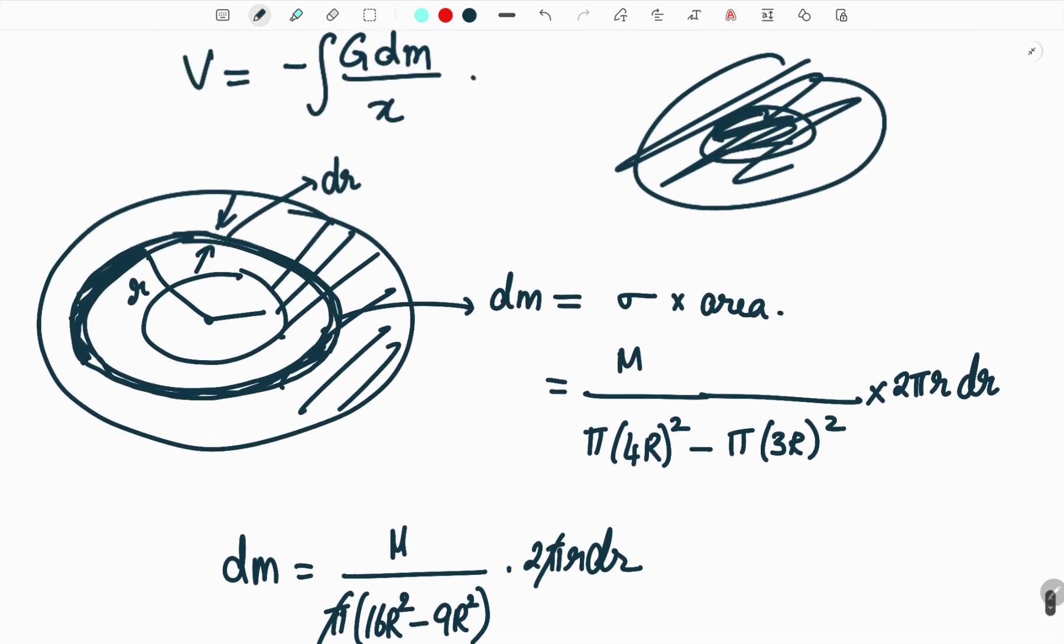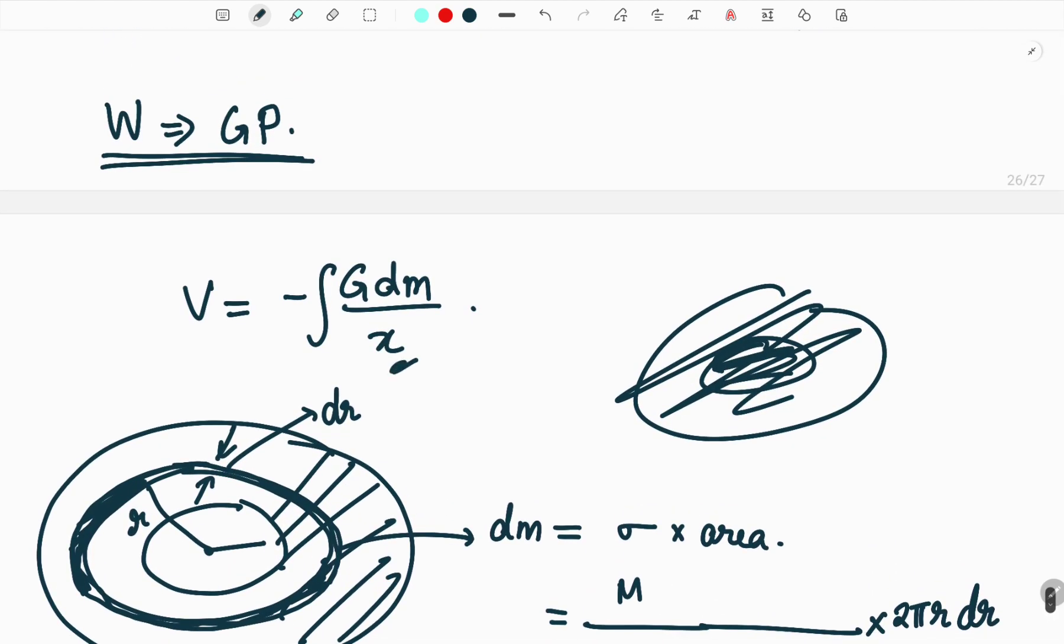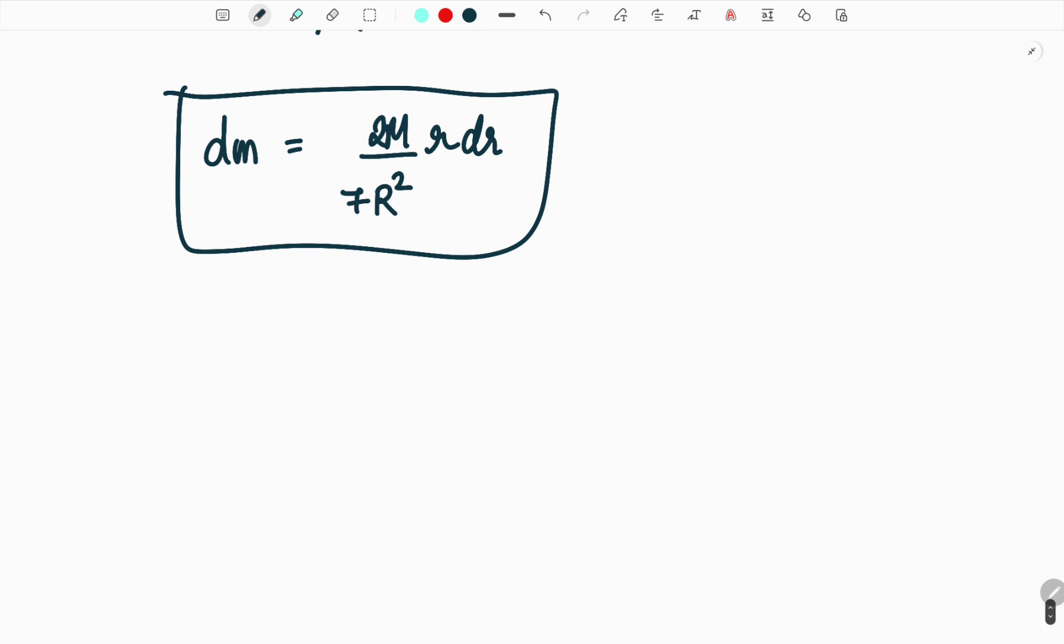And now what is this x? So x is the distance from the element to the point. So in our diagram if I consider it like this, and this is our small element, our point P is here.